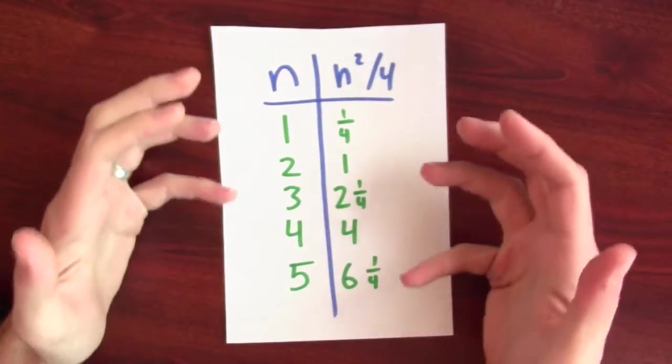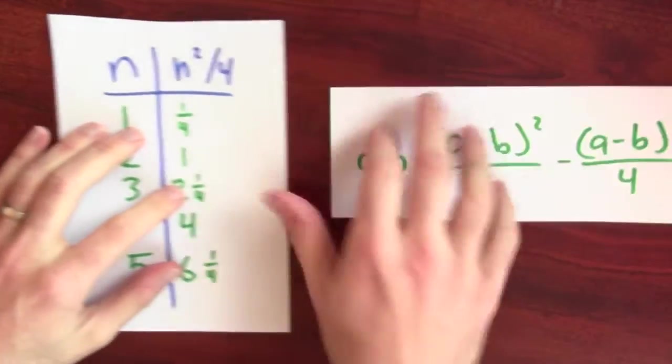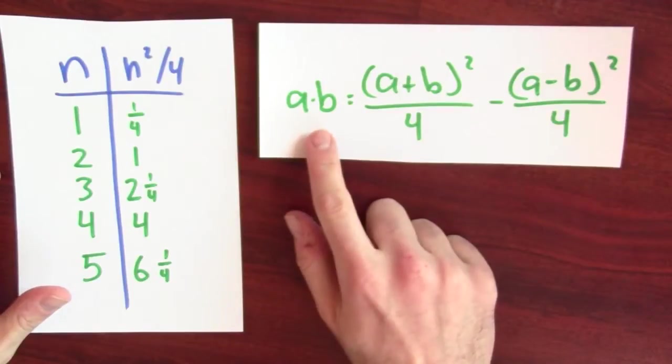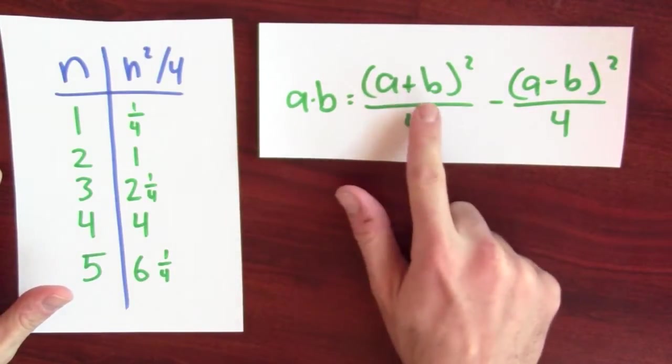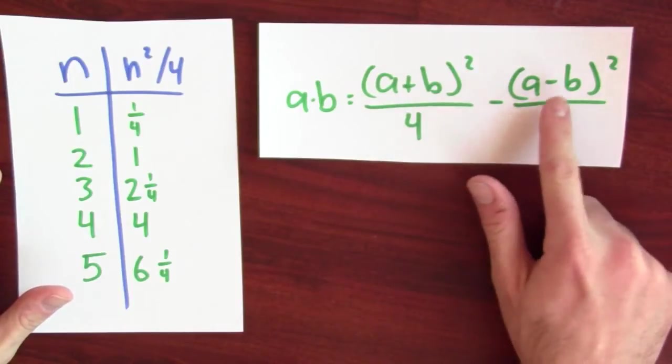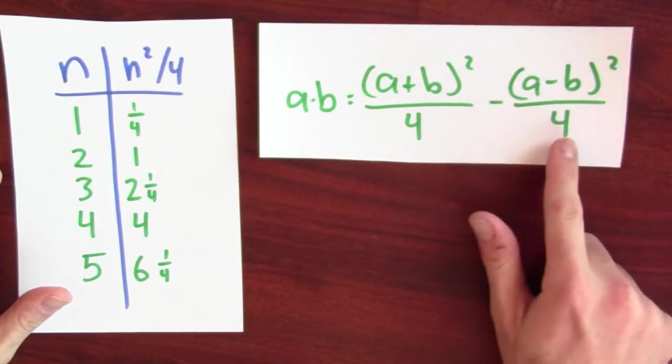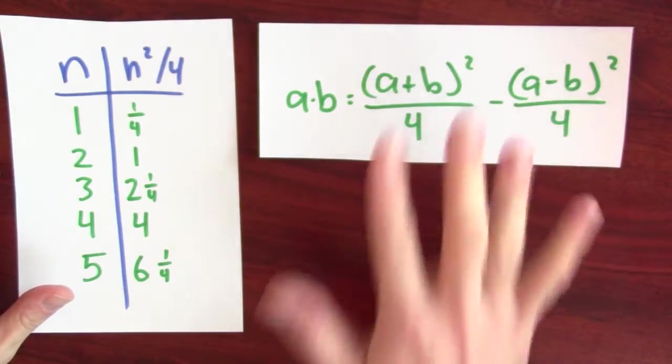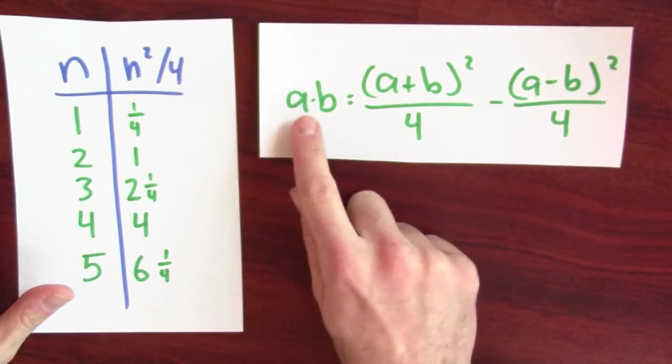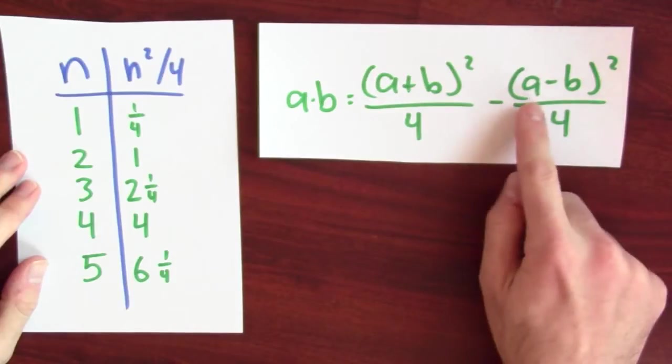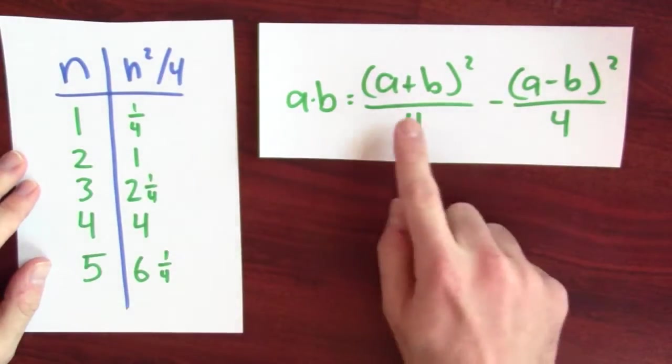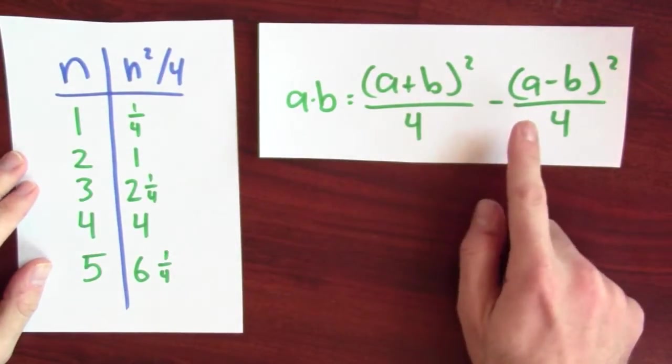Now, why does this help you multiply? Well, you've also got this little algebraic fact. a times b is a plus b squared over 4, the quarter square of a plus b minus a minus b squared over 4. So instead of multiplying a and b, I'll add them together, look it up in the table, take their difference, look it up in the table, and take the difference of those table values.